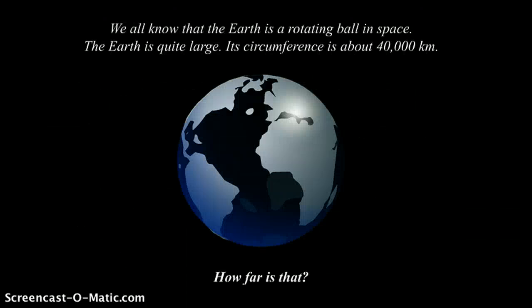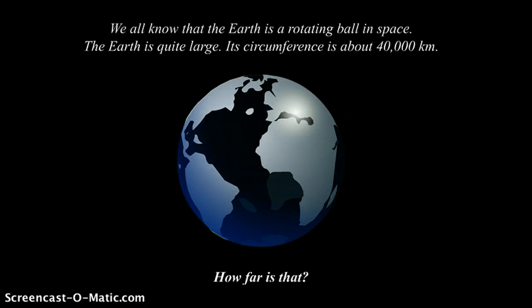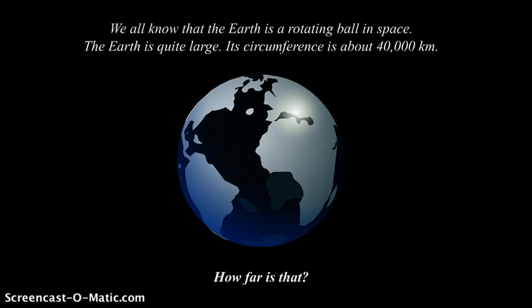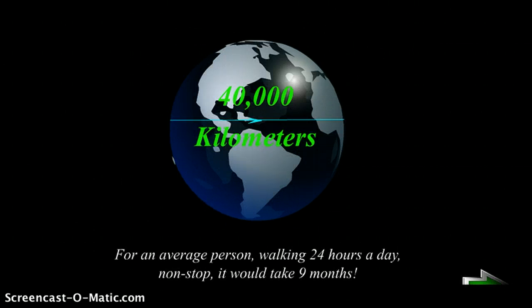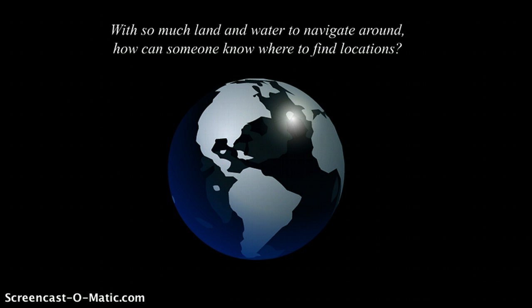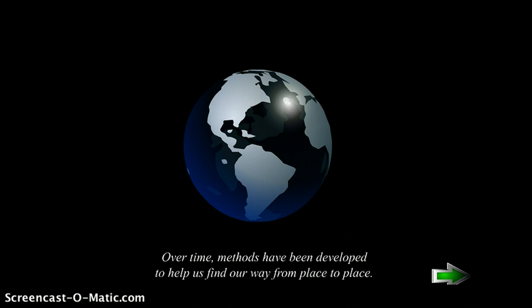We all know that the earth is a rotating ball in space. It is quite large, with a circumference of about 40,000 kilometers. How far is that? Well, for an average person walking 24 hours. Now with so much land and water to navigate around, how can someone know where to find locations? Over time, methods have been developed to help us find our way from place to place.